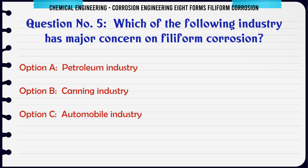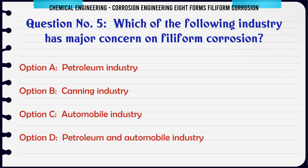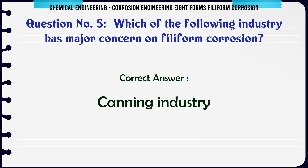Which of the following industries has a major concern on filiform corrosion? a. Petroleum industry. b. Canning industry. c. Automobile industry. d. Petroleum and automobile industry. The correct answer is b: canning industry.